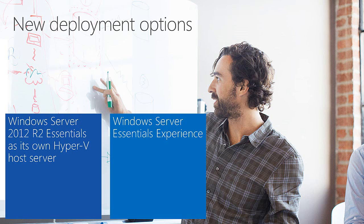Just to mention as we get started, there are a couple of big new changes with Essentials in terms of deployment options. First, you can now use Windows Server 2012 R2 Essentials as its own Hyper-V host. In previous versions, the Essentials Edition couldn't be its own Hyper-V host. With 2012 R2, you can buy a single license of the Essentials Edition, use that to run your Hyper-V host, and then also run as a guest virtual machine on that host. Second, all the features and functionality of the Essentials experience have been packaged into a role available on Standard and Data Center editions — the Windows Server Essentials Experience role.